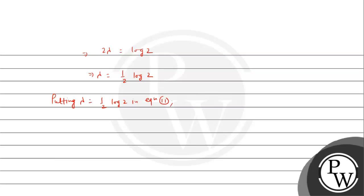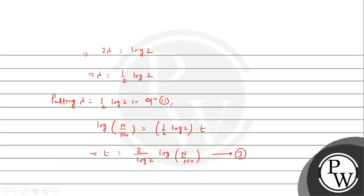Now putting lambda equals (1/2) log 2 into the equation: log(n / n0) equals (1/2) log 2 times t. Rearranging, t equals (2 / log 2) times log(n / n0). We will call this equation 3 and proceed further.